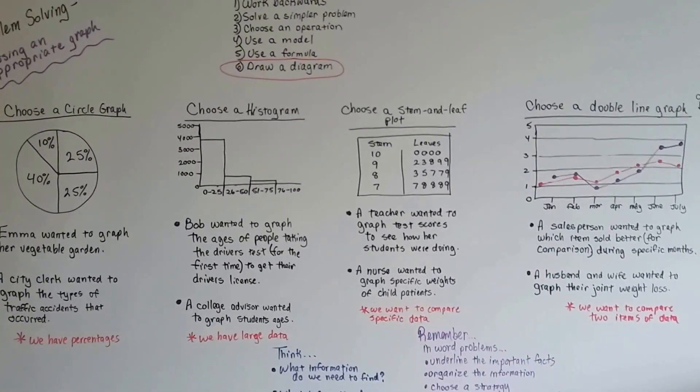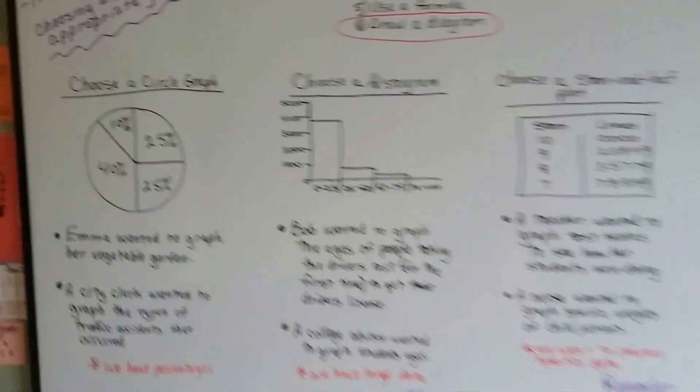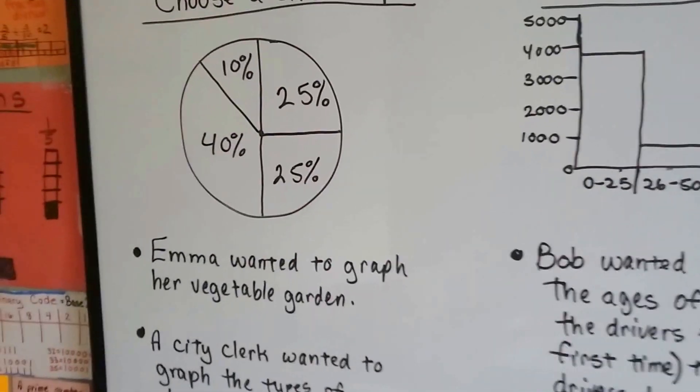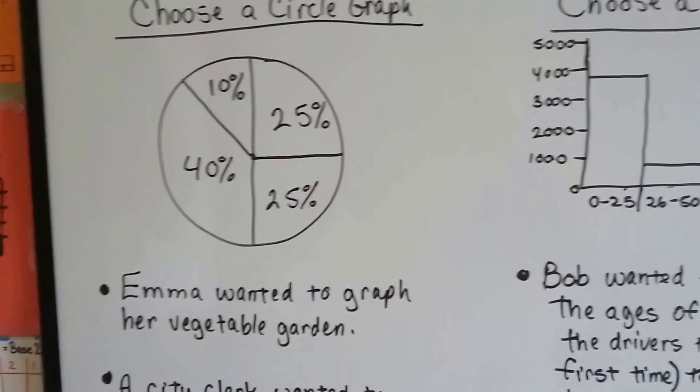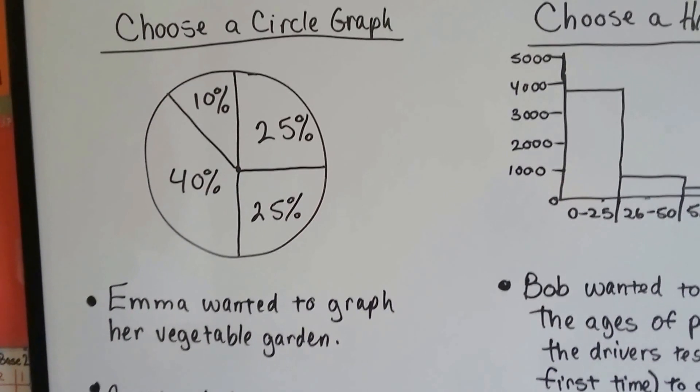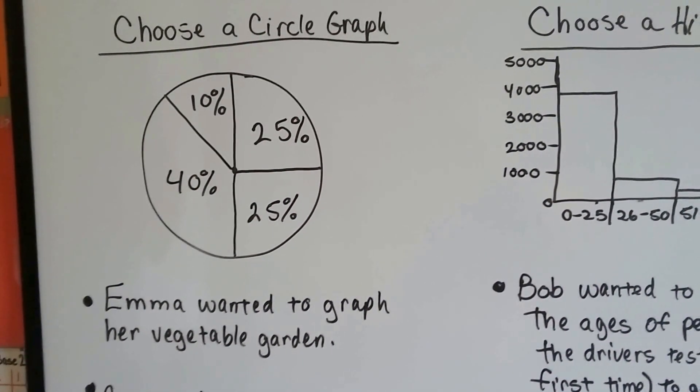You need to be able to know which diagram is the correct one to choose for your word problem. If we're going to choose a circle graph, like Emma wanted to graph her vegetable gardens because 25% were tomatoes, 25% were beans, 40% was corn, and 10% was carrots, she could do this.